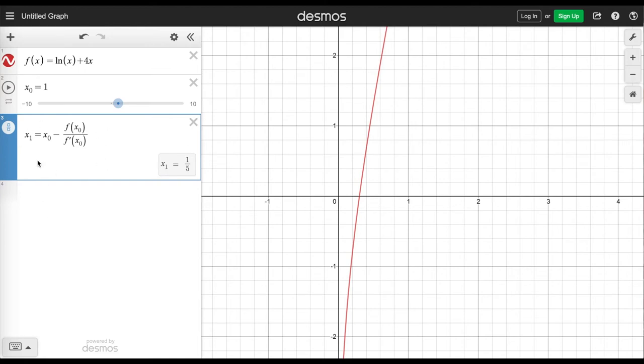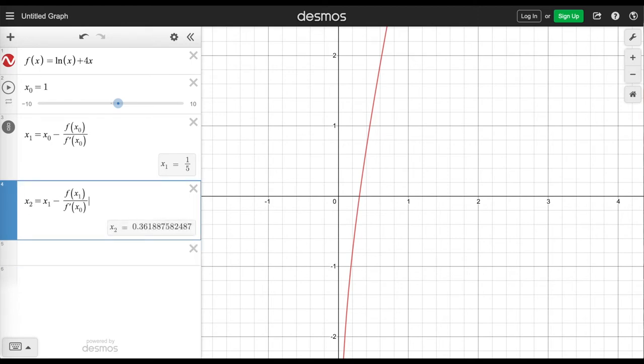Now for our second iteration I don't even need to rewrite this again. I can just copy this code, put it down here and just change the subscripts. So we have x sub 2, x sub 1 and that's our second approximation. It's about 0.289, about what we got when we did this by hand.